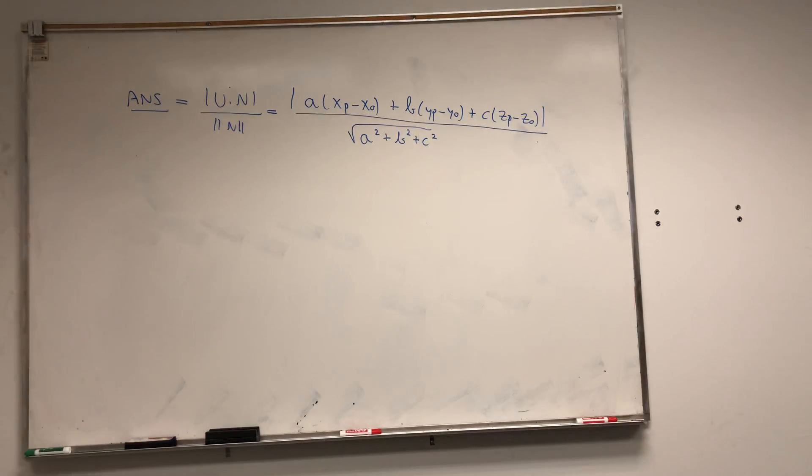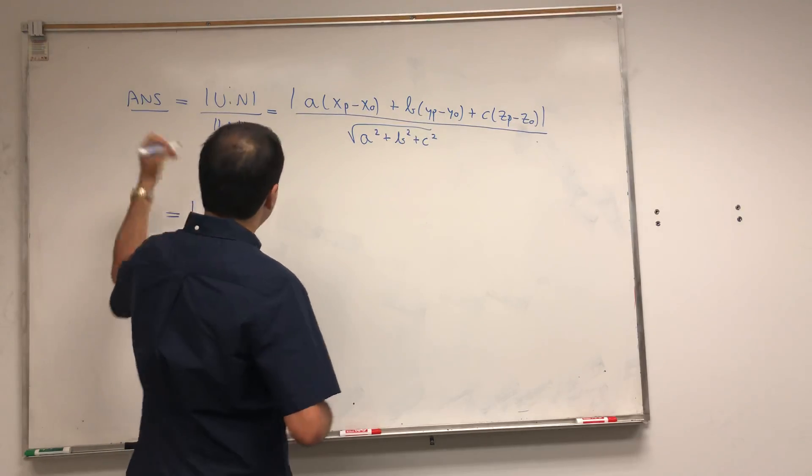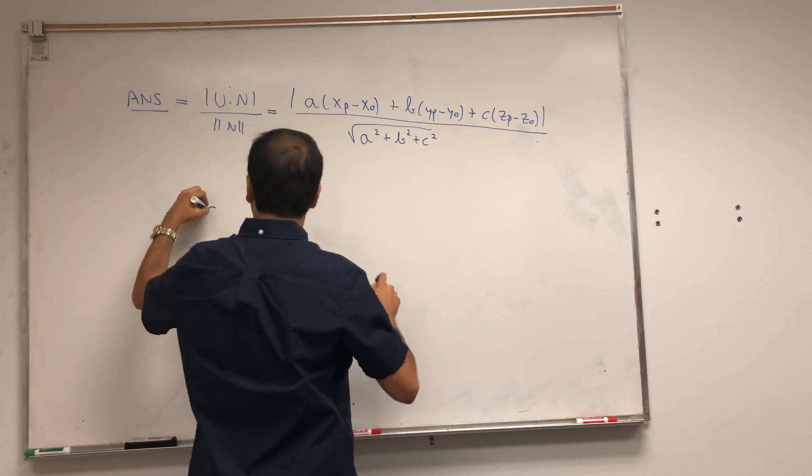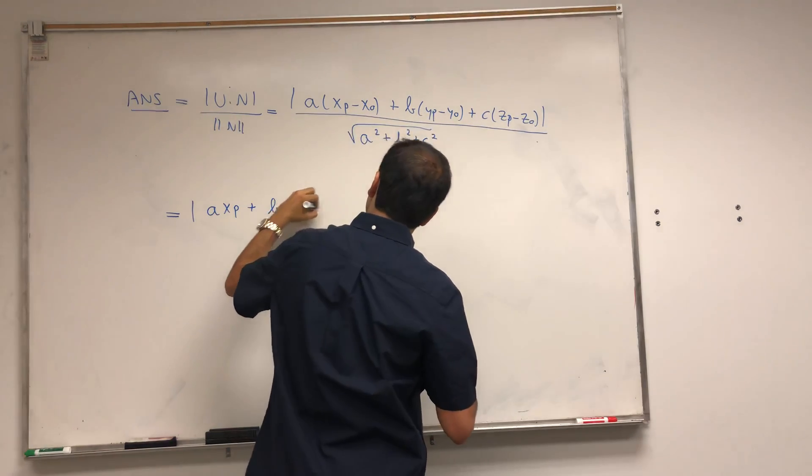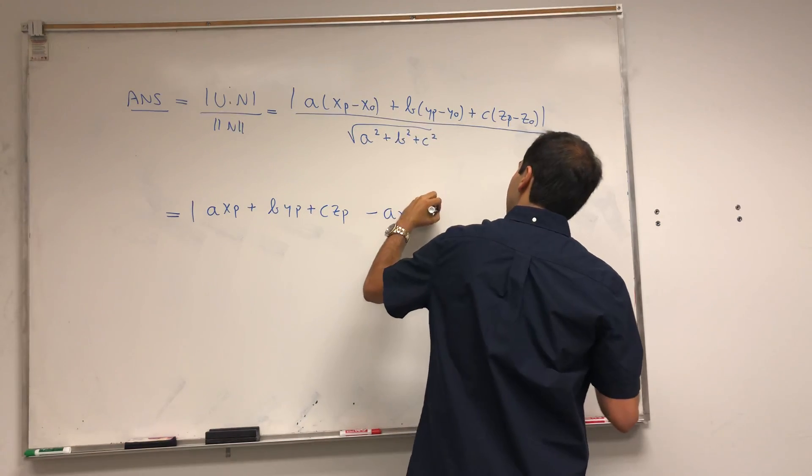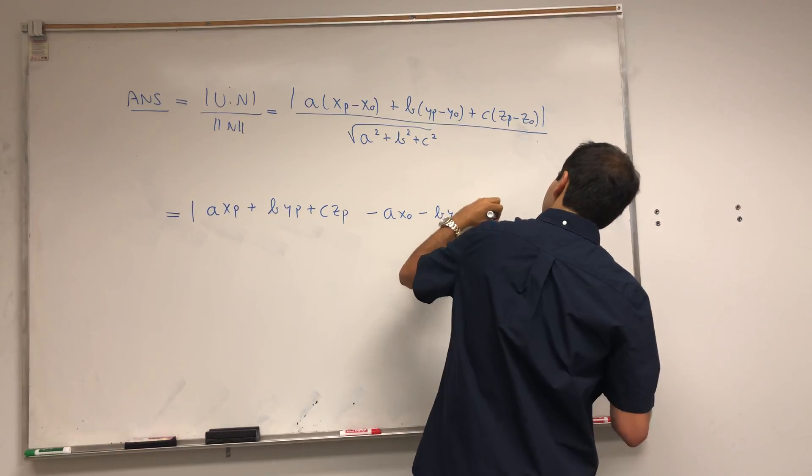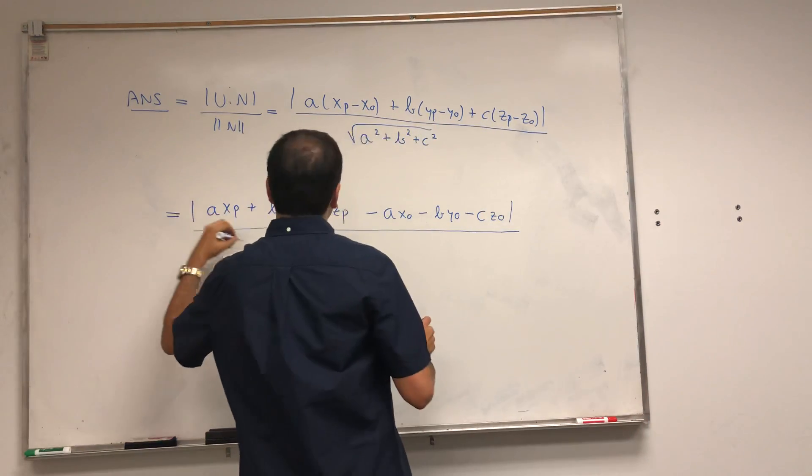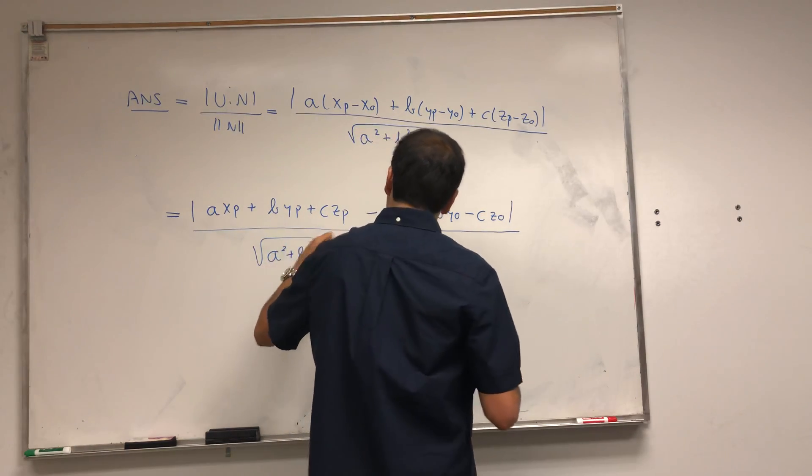The only annoying thing is this still depends on x₀, y₀, z₀. Ideally we want to get rid of this so it depends purely on our data. But no problem, let's just expand this out. So it's |Axp + Byp + Czp - Ax₀ - By₀ - Cz₀| over √(A² + B² + C²).